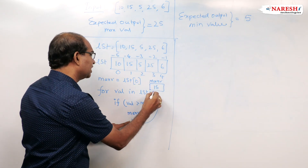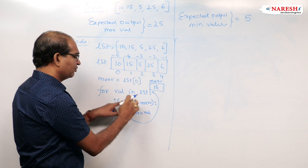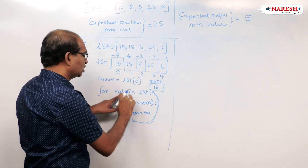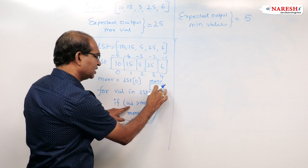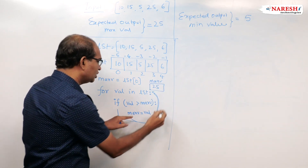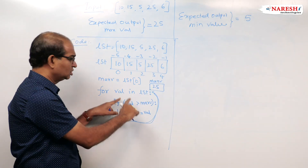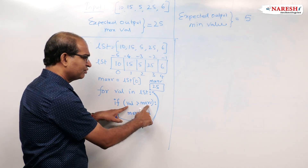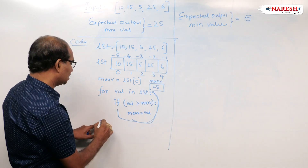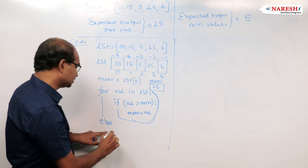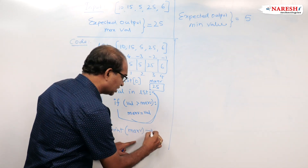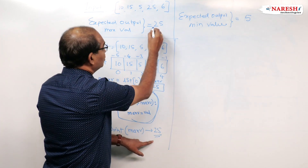Next it goes to the loop again. Value is 5: 5 greater than 15 is false. Loop again — value is 25: 25 greater than max_v (15) is true, so max_v is updated to 25. Loop again — value is 6: 6 greater than 25 is false. For loop has no more values, becomes false. We come out and print max_v. The output is 25, which is the expected output.